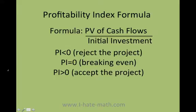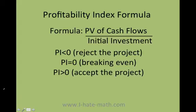You need to remember: if the PI result is less than one — if you get like 0.2 or a decimal — you need to reject the project. That tells you that the initial investment is actually higher than the present values you're going to be obtaining for your investment. If it's equal to zero, that means you're breaking even. And if it's greater than one, you want to accept the project because that means you're going to be making money.